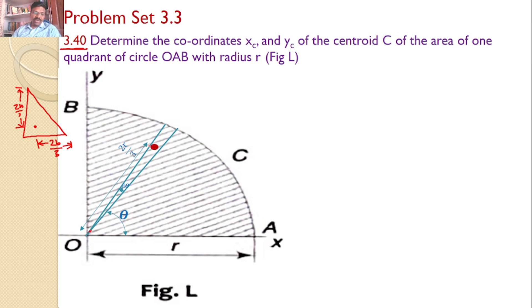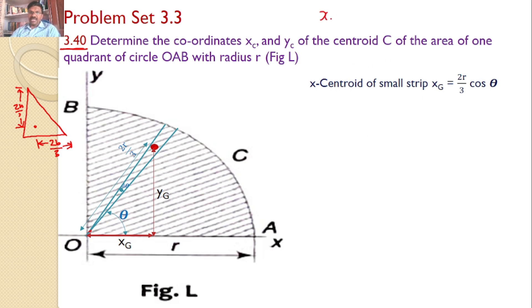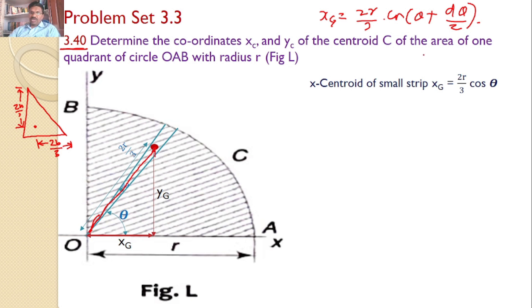From this point, the total distance is R, hence the centroid is at 2R by 3. The x-coordinate of this small strip, xz, is equal to 2R by 3 into cos(theta + d theta by 2), because we consider a right angle triangle like this. This becomes cos(theta + d theta by 2). But d theta by 2 is very, very small, so we can neglect it compared to theta. So you will get xz equal to 2R by 3 into cos theta.